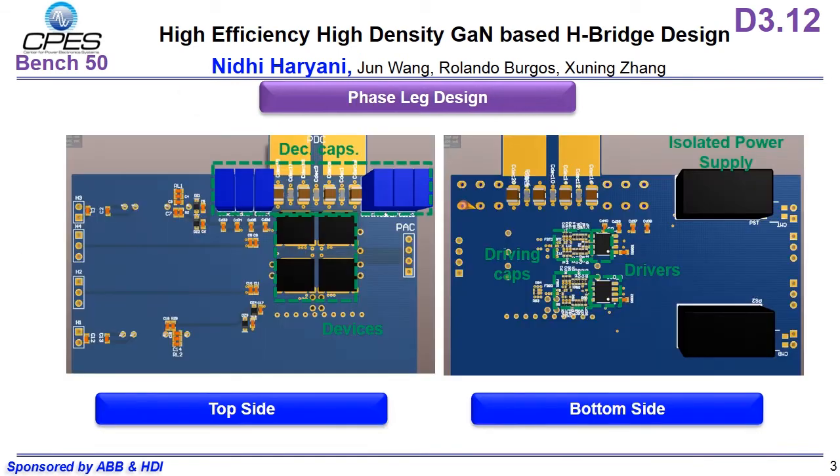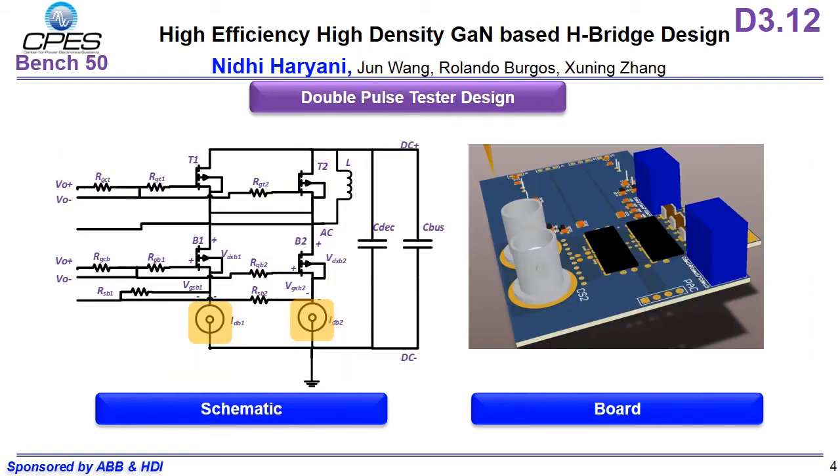This is the phase leg design for my GaN H-bridge which we will see in the prototype. This is the double pulse tester design which I will show in my setup.